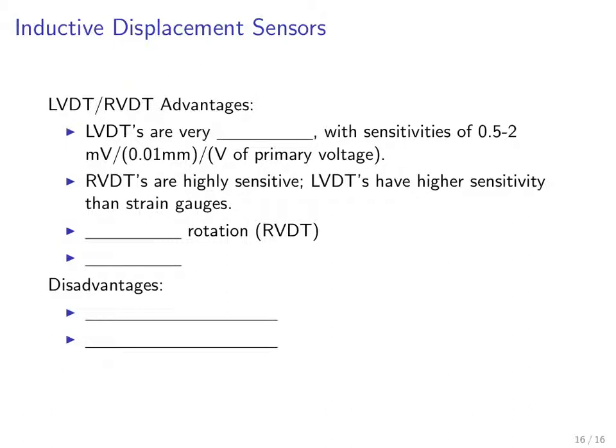We'll finish up with advantages and disadvantages. One advantage of LVDTs is that they are very linear, with sensitivities of about 0.5 to 2 millivolts per 0.01 millimeters of motion per volt of primary voltage. The output voltage is linearly proportional to the primary voltage. RVDTs are highly sensitive, and LVDTs have significantly higher sensitivity than strain gauges. The RVDT allows you to do infinite rotations. You can keep spinning the shaft and getting a readout continuously. They are very rugged devices.